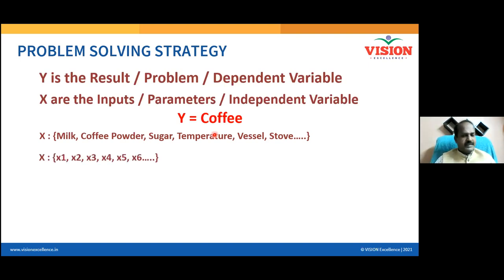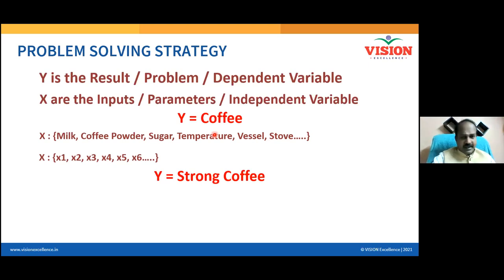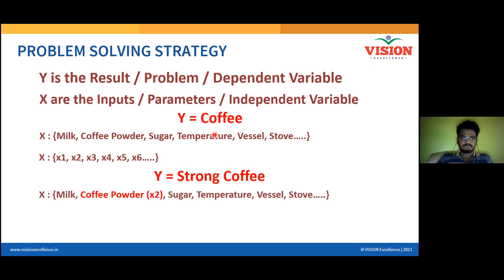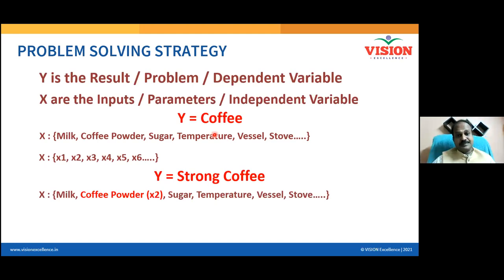These are named X1, X2, X3, X4, X5, and X6. Now, out of 100 complaints, 80 are related to the strongness of the coffee. Which factor is really critical to this problem? Coffee powder is critical, and milk and water to a certain extent. But coffee powder is more critical. A factor that has more influence on your Y is called a critical factor.